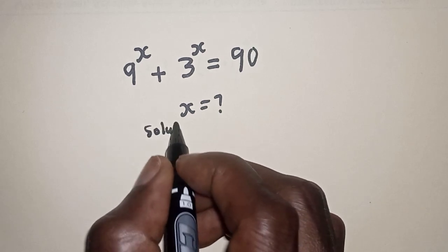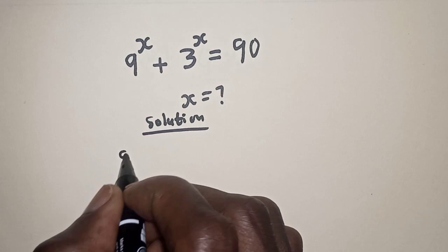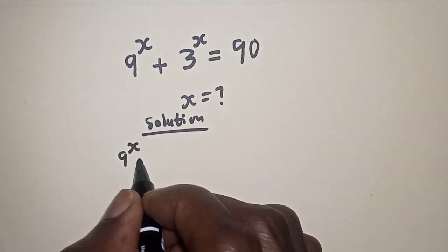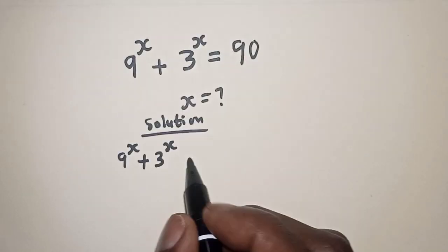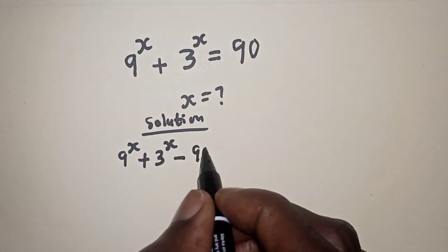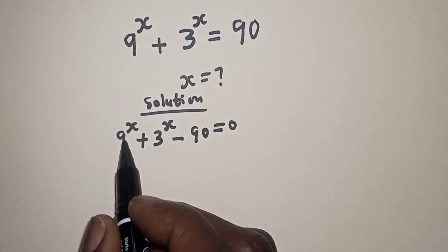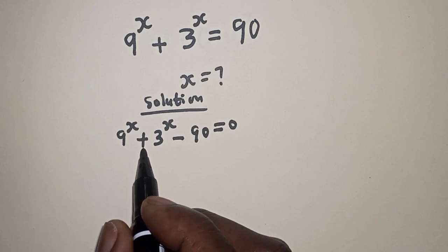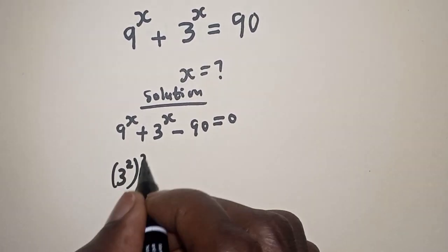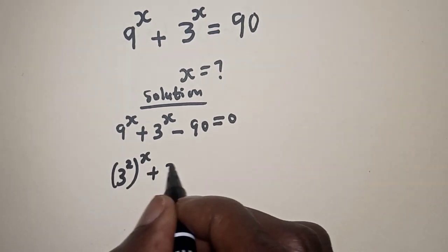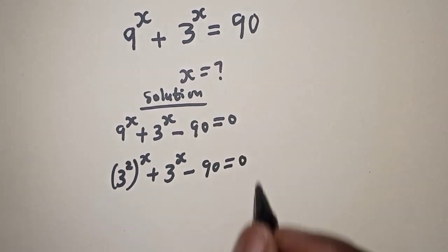Solution. We have 9 raised to power s plus 3 raised to power s. If this 90 comes to the other side, it becomes minus 90, equal to 0. Then 9 raised to power s can be written as 3 raised to power s squared, plus 3 raised to power s minus 90 is equal to 0.